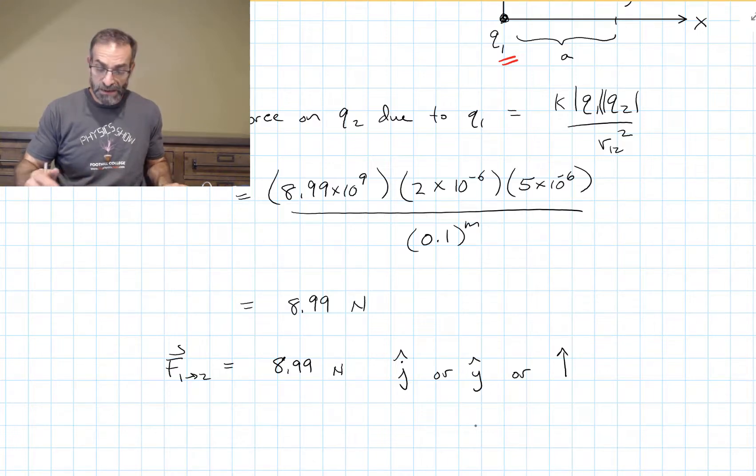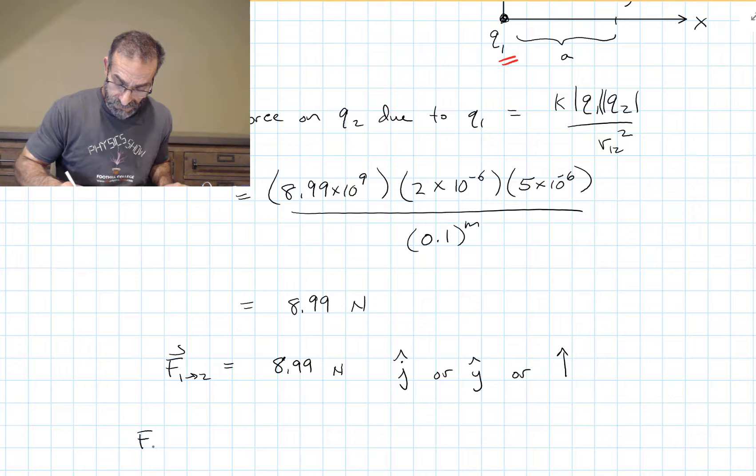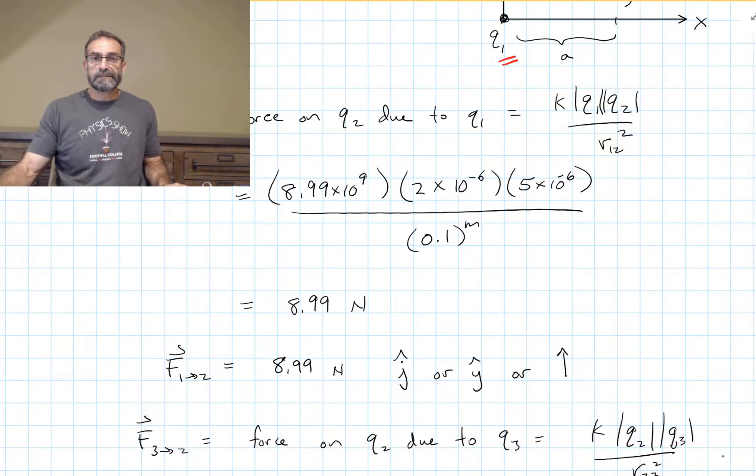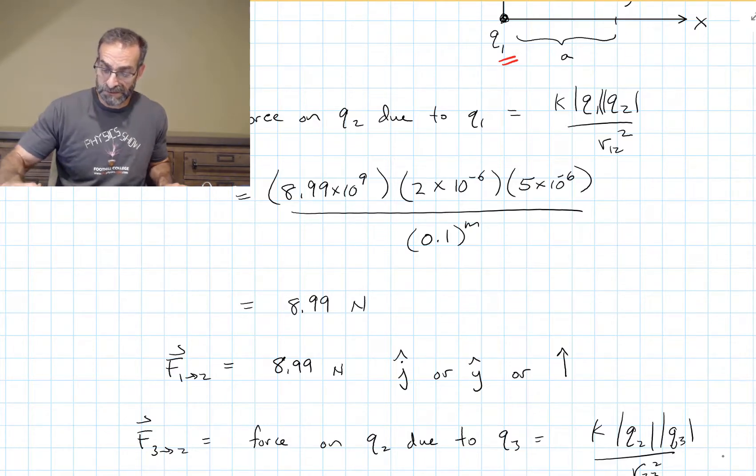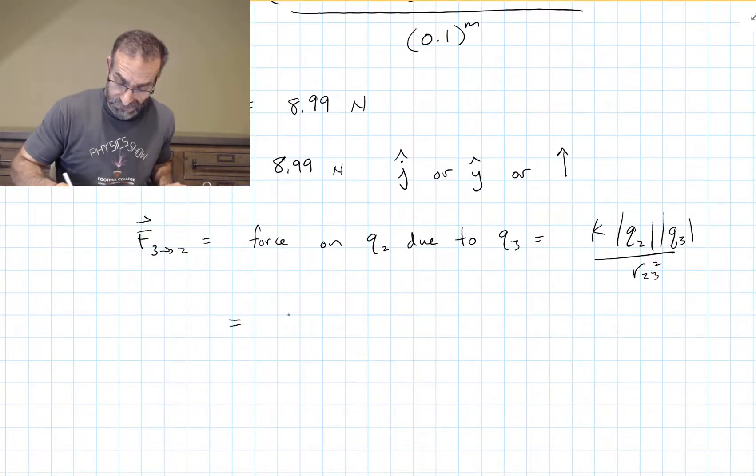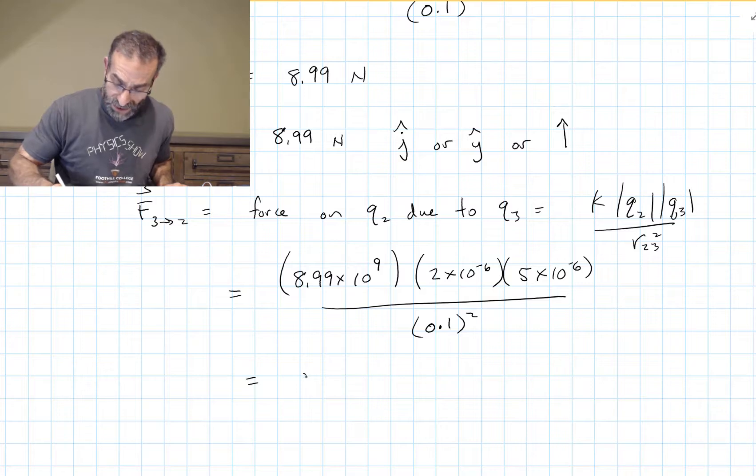Now we do the same thing for the force from 3 acting on 2. The force is KQ2Q3 over the distance between Q2 and Q3 squared. And when we plug in the numbers, we get 8.99 newtons.